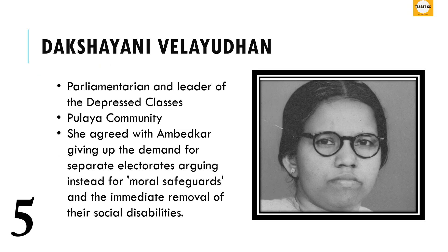Next is Dakshayani Velayudhan. She was a parliamentarian and a leader of the depressed classes. She belongs to the Pulaya community and was among the first generation of people to be educated from that community. She agreed with Ambedkar in giving up the demand for separate electorates, arguing instead for moral safeguards and the immediate removal of social disabilities. As a Dalit leader, she strictly opposed forced labor.